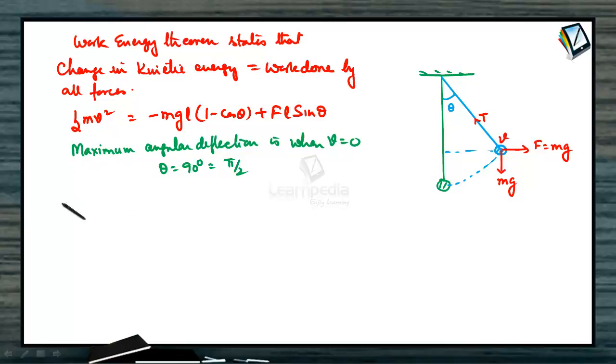Now let us calculate the tension. Tension at angular deflection theta. T is equal to Mg cos θ plus Mg sin θ plus Mv² by L. So when T is maximum differentiate put it equal to 0. dT by dθ is equal to 0. So differentiating substituting we get theta is equal to pi by 4. So T is maximum theta is pi by 4.